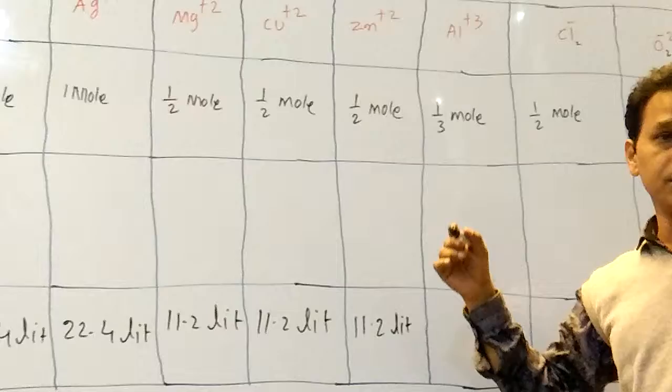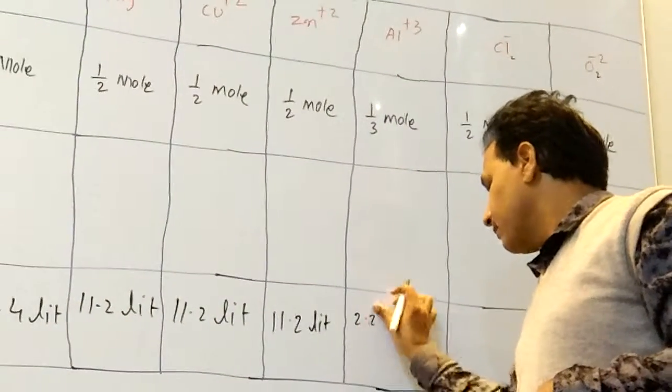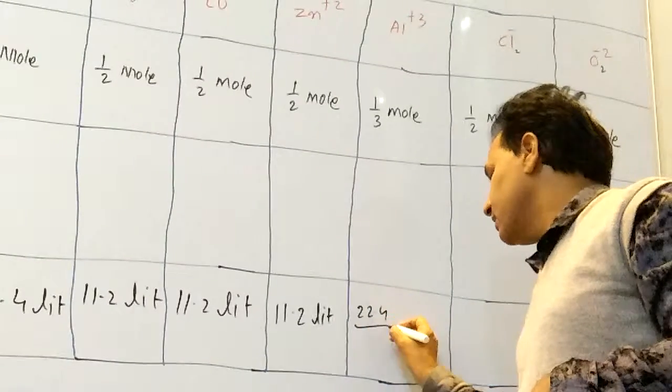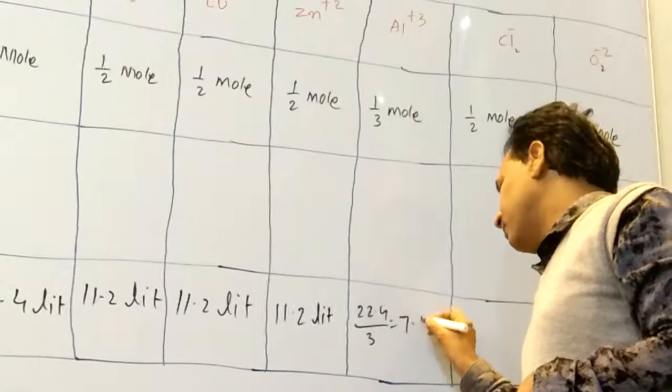Here, how many? One by three. One by three means 22.4. What is this? 22.4 by 3, that is 7.4 liter.